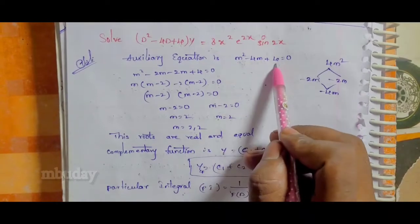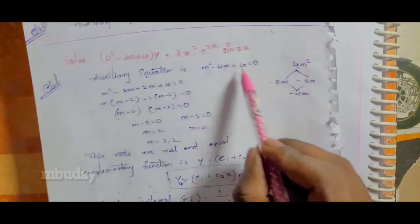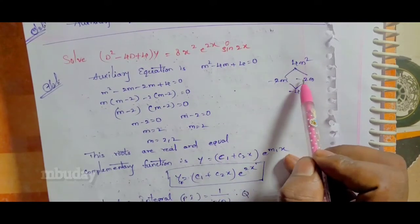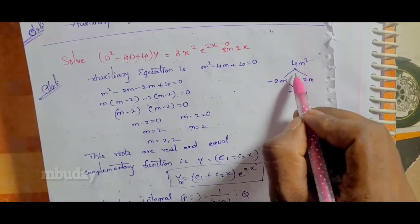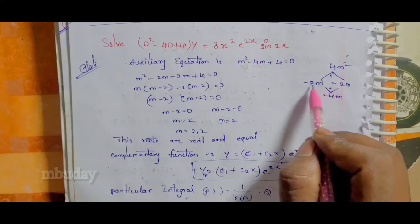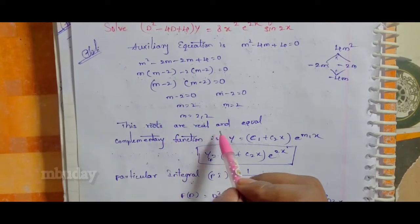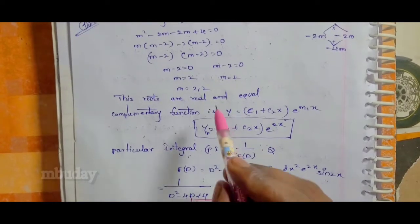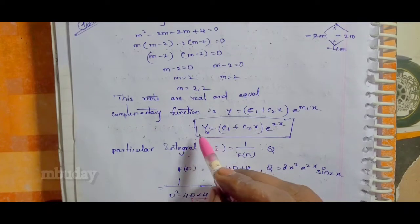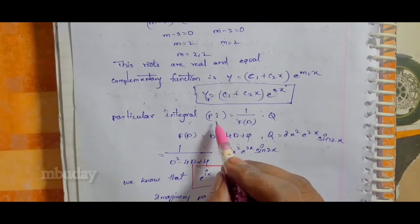Solving m² - 4m + 4 = 0 gives m = 2, 2 (repeated roots). So the complementary function is y_CF = (c₁ + c₂x) · e^(2x), where m₁ = m₂ = 2.